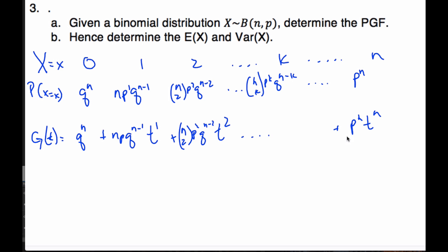If I think about what this is — p and t always have the same exponent — I could write this as (q + pt) to the power of n. If I expand out that term, I get exactly all these terms. So the generating function for the binomial is simply (q + pt)^n, working backwards from the binomial expansion to a simpler form.